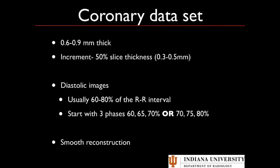Coronary datasets are generally 0.6 to 0.9 millimeters thick. For best image quality, you want about a 50% overlap — so if you have a 0.6mm thick slice, your increment is going to be 0.3; at 0.9mm, your increment is about 0.45. You generally create mid to late diastolic images at 60 to 80% of the R-to-R interval, typically 60, 65, or 70%, depending on your vendor. One key difference: Siemens defines the percent of the R-to-R interval at the beginning of the window, so at a heart rate of around 60, it's about 10% less than on Philips or GE. You'll also want a relatively smooth reconstruction kernel.